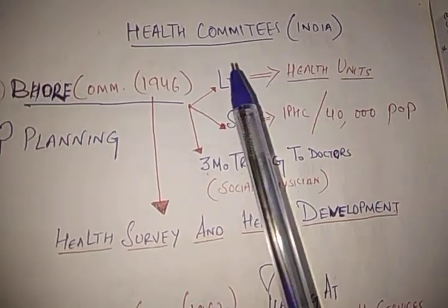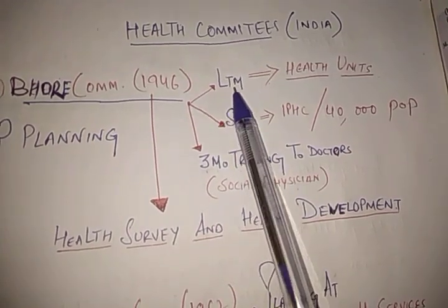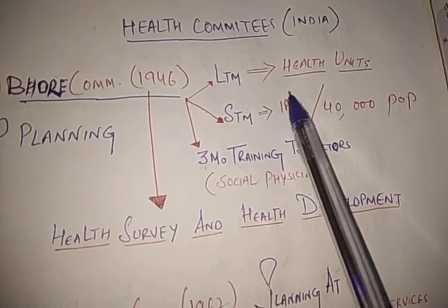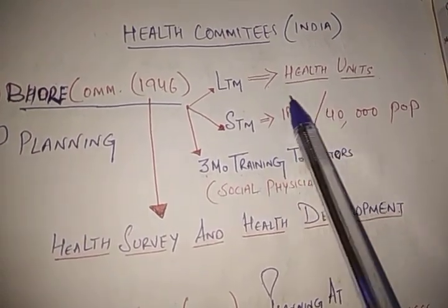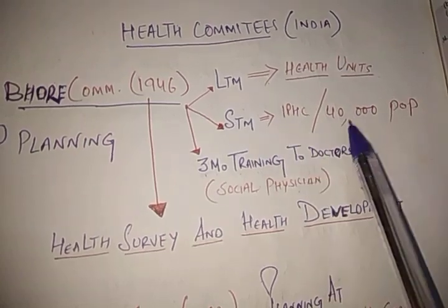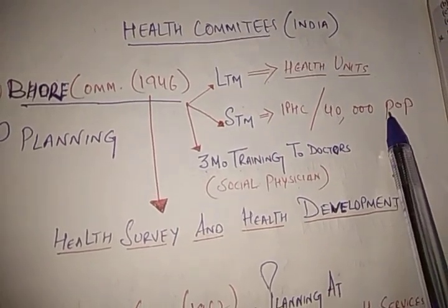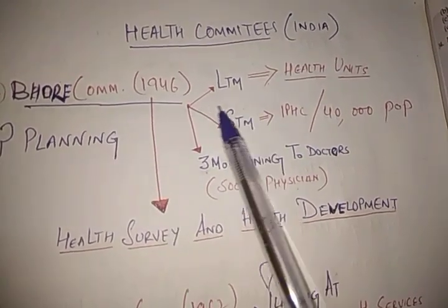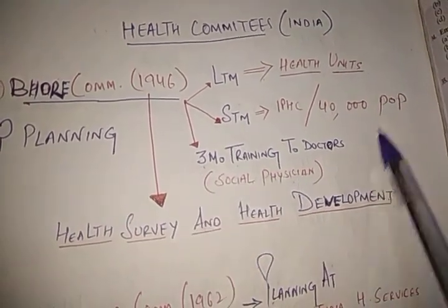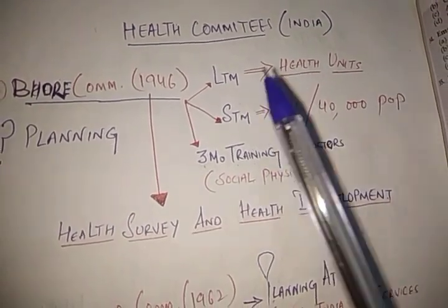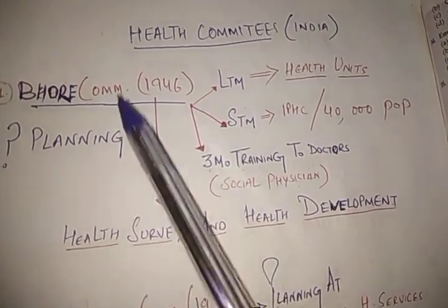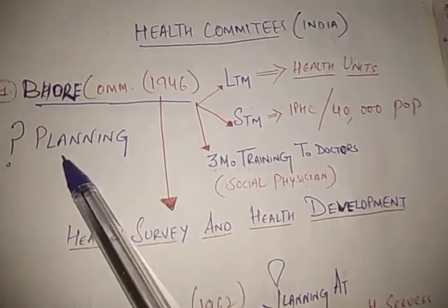As a short-term measure, the Bhore Committee introduced the concept of PHC, or Primary Health Center, and recommended there should be one PHC for 40,000 population. However, all the services provided by the Bhore Committee lacked planning to strengthen these services, which was the drawback of the Bhore Committee.